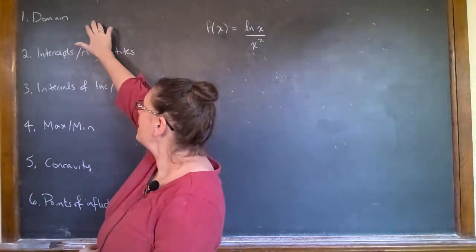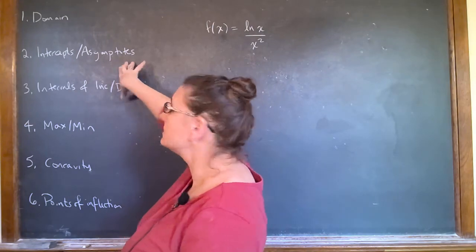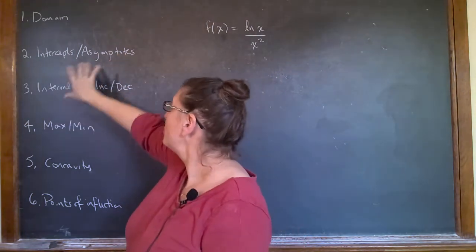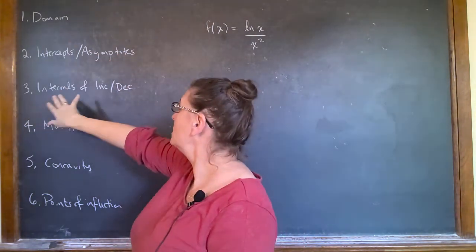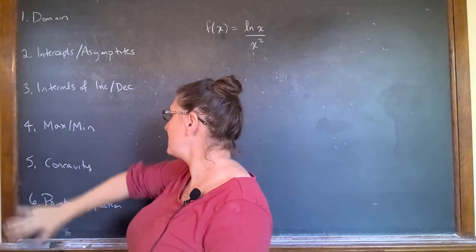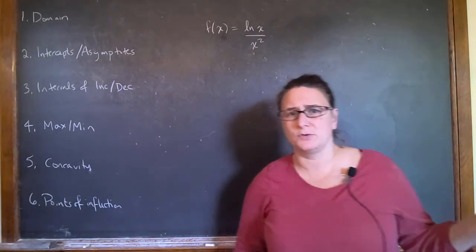You're going to look at the domain, the intercepts, asymptotes if they exist, both horizontal and vertical, intervals of increase, decrease, maximum, concavity, points of inflection. So it's the same thing we've been doing.